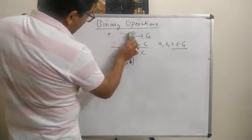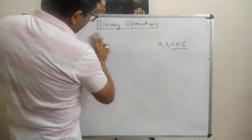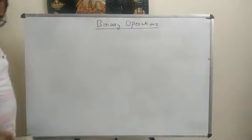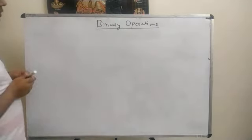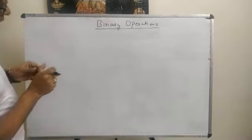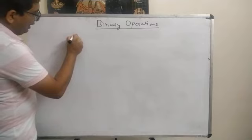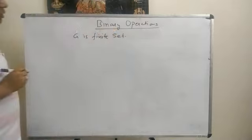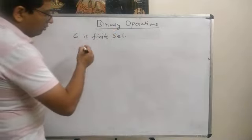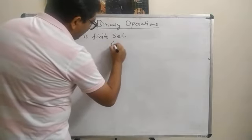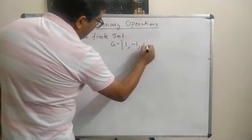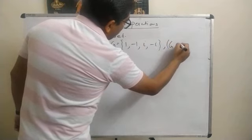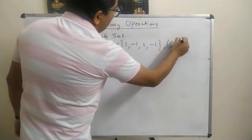Today we will start with composite tables. These tables are helpful to check whether a binary operation holds the four properties or not, but they can only be drawn when G is finite. Let us consider a finite set G. We take the set G = {1, -1, i, -i} with the algebraic structure (G, ·), where dot means usual multiplication, and we know that i² = -1.